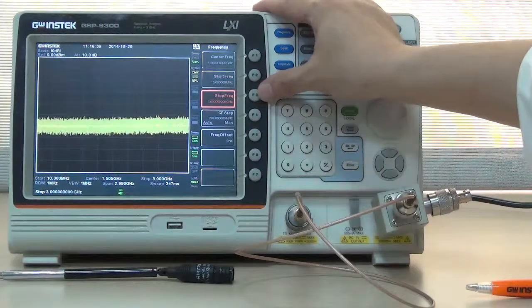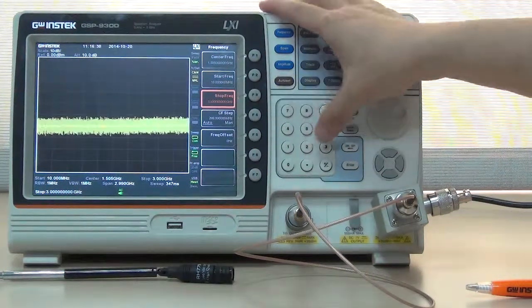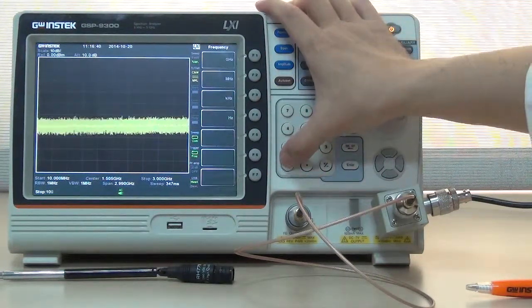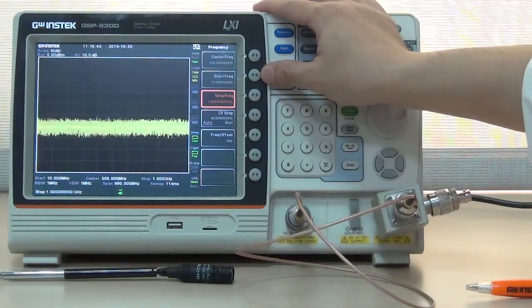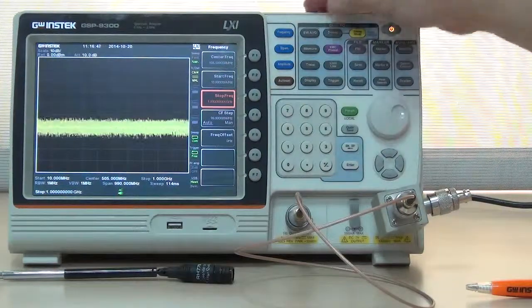Press F3 Stop Frequency, input 1000 MHz to set stop frequency as 1000 MHz.